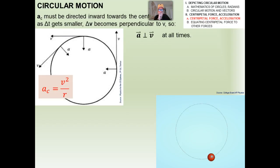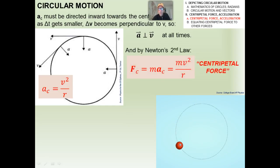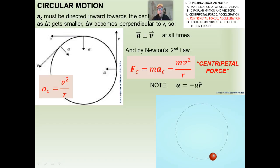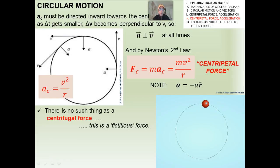The centripetal acceleration must be directed inwards towards the center. As delta T gets smaller, delta V becomes perpendicular to the velocity, which is always tangent to the circle. By Newton's second law, F equals MA, so the centripetal force is simply MV squared over R. The acceleration is always pointed inwards — in the negative R-hat direction. I also want to dispel the notion of centrifugal force: there is no such thing as centrifugal force. It's a fictitious force. There is centripetal force, but no centrifugal.